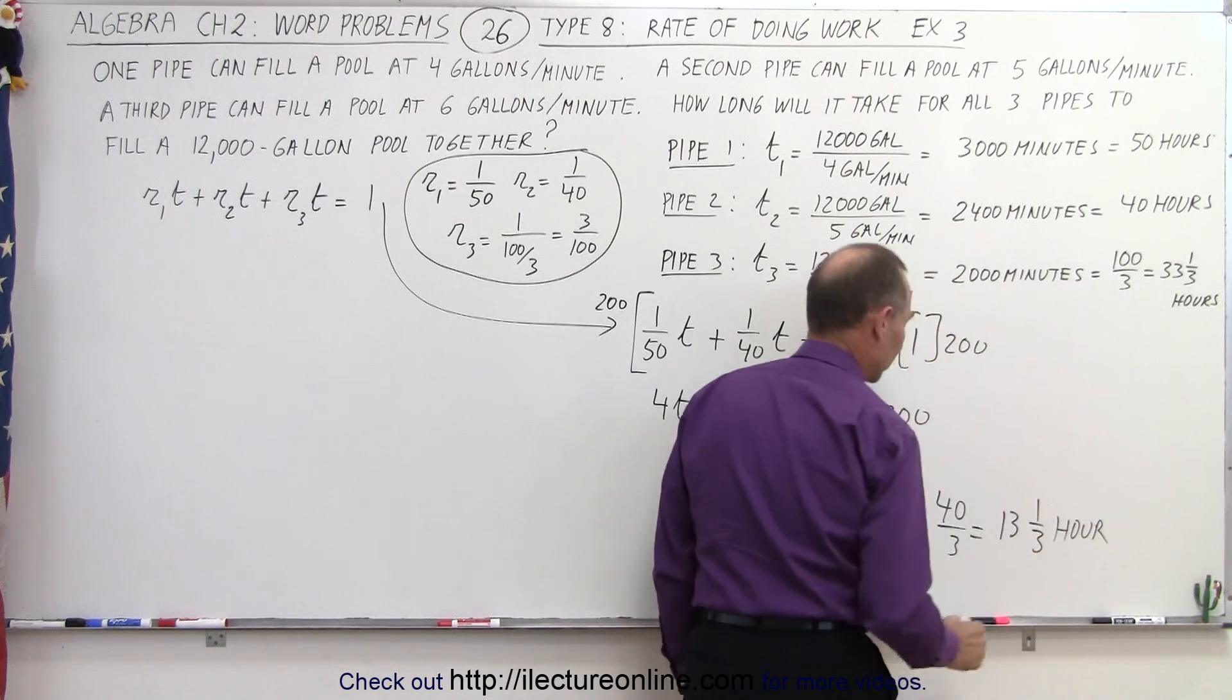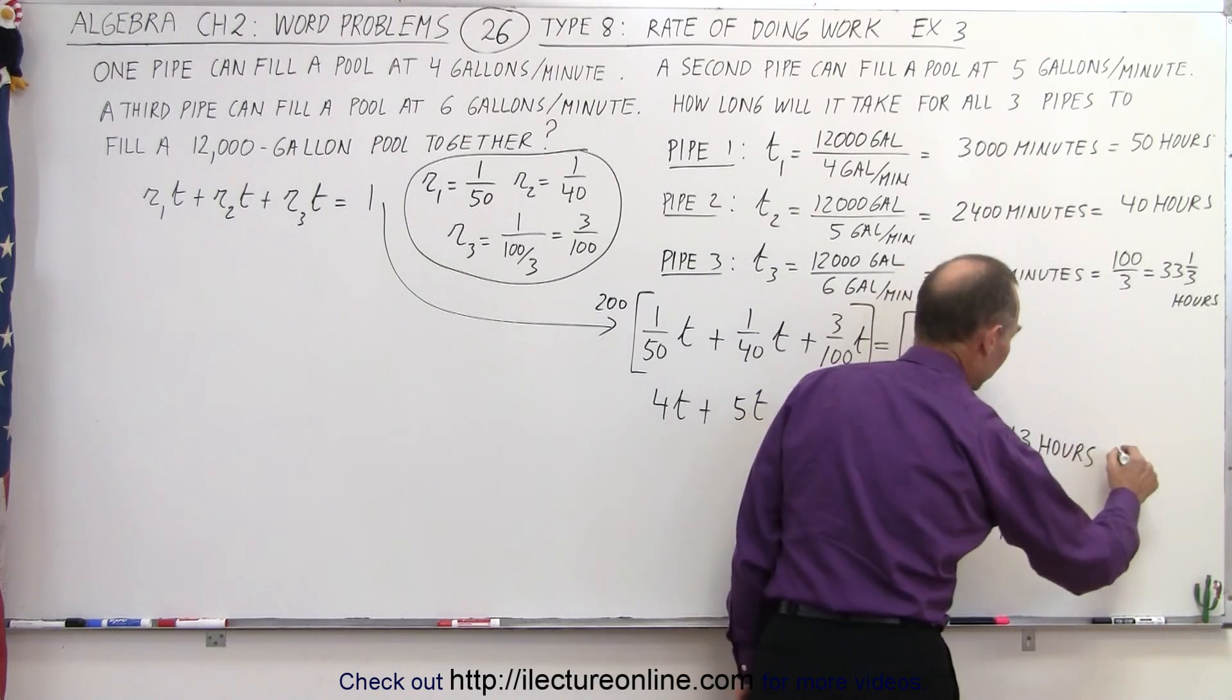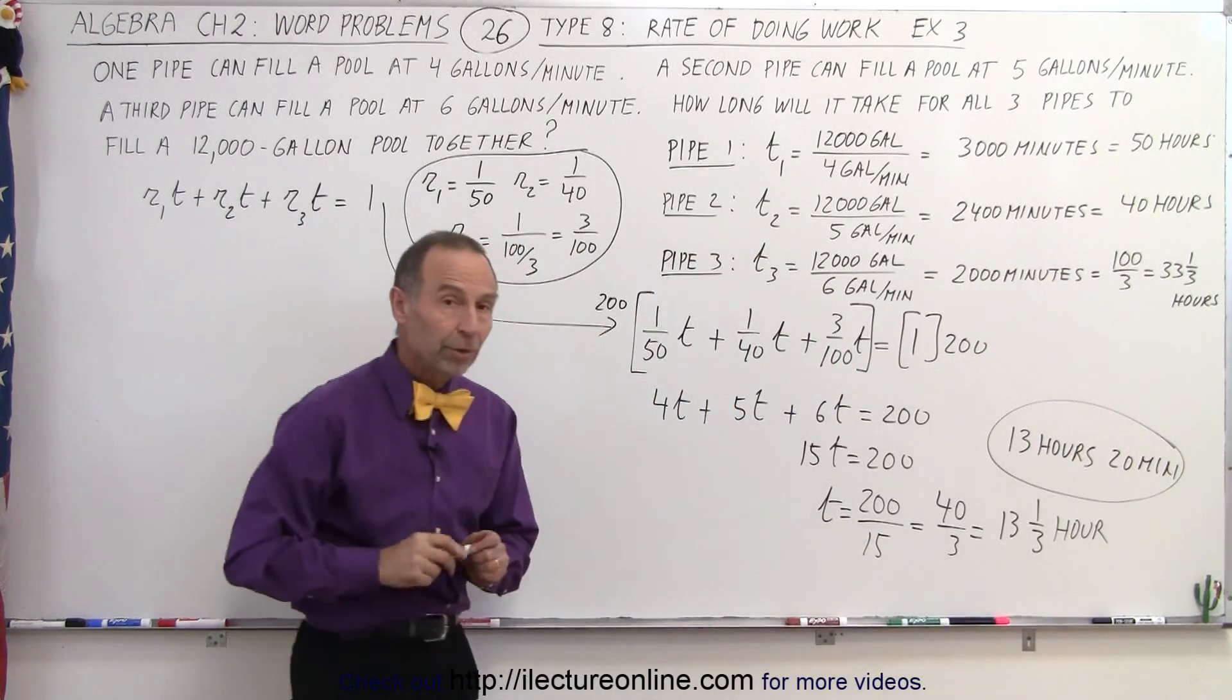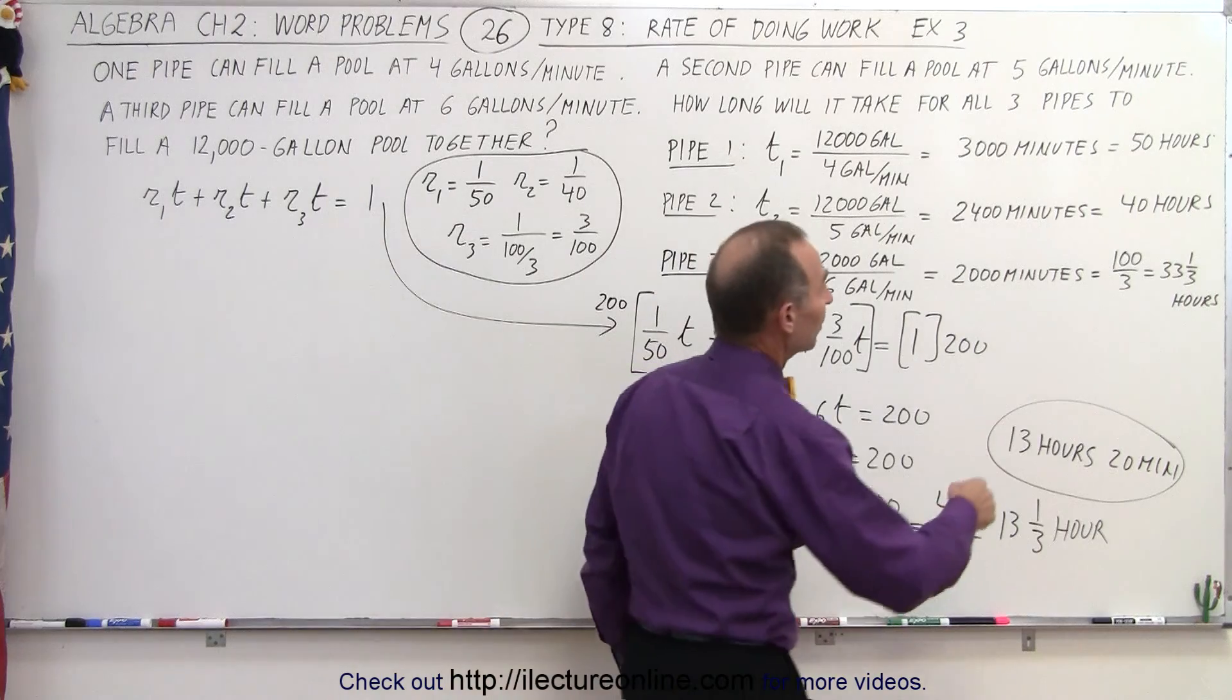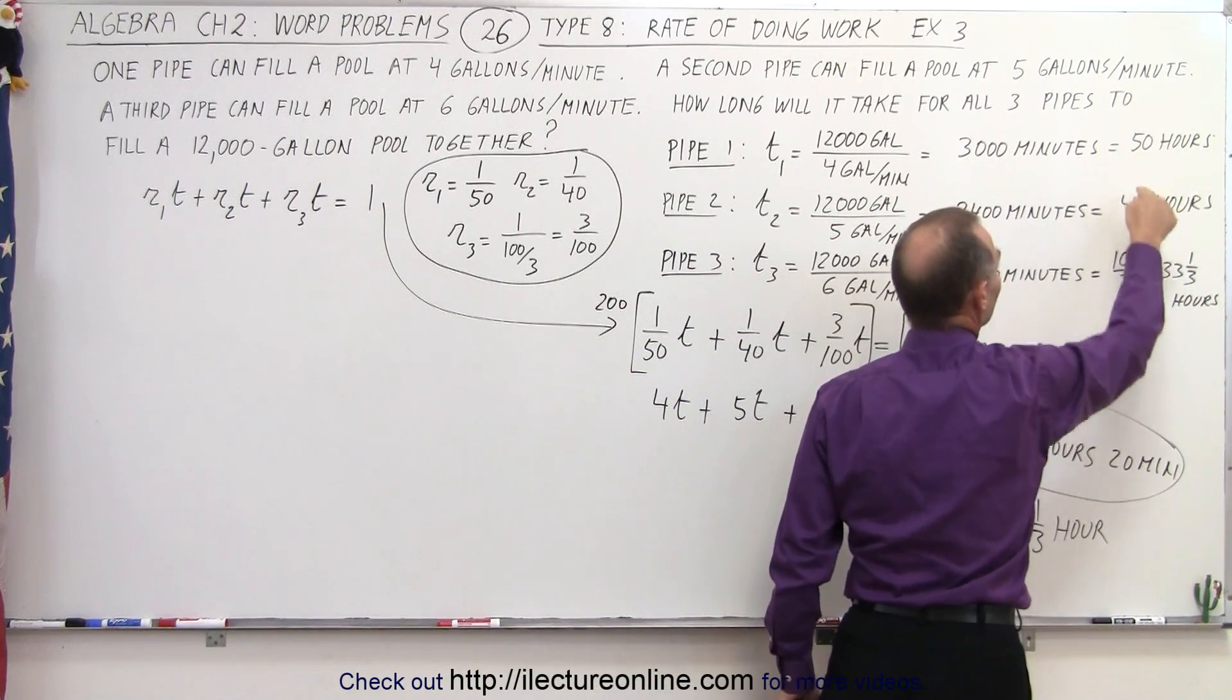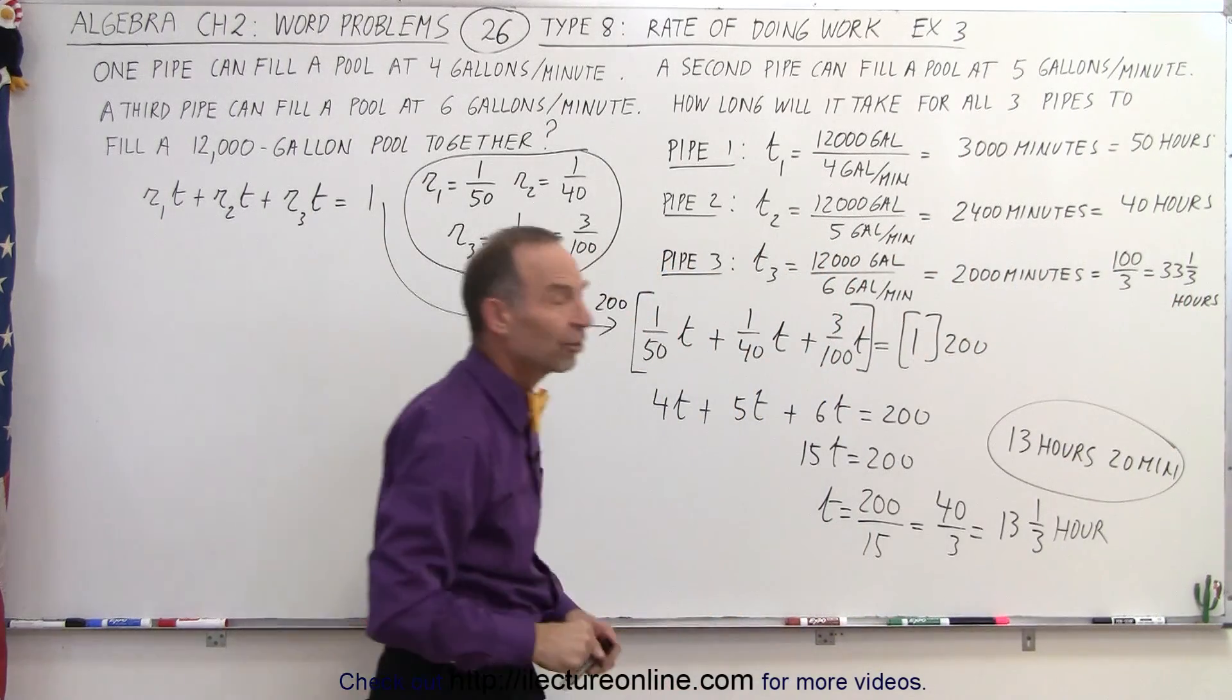Of course, 13 and a third would be 13 hours and 20 minutes. So all three pipes left open together, they can fill the pool in 13 hours and 20 minutes, when this is the amount of time it would take for each of the three pipes to fill the pool by themselves: 50, 40, and 33 and a third, but together they can do it in 13 hours and 20 minutes.